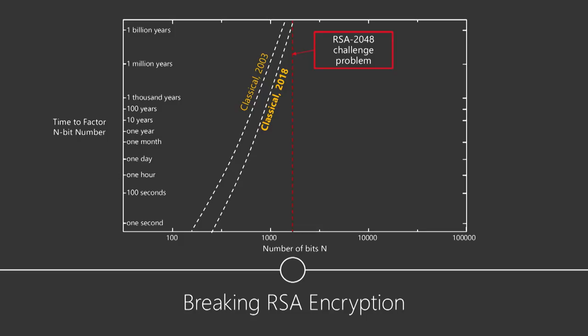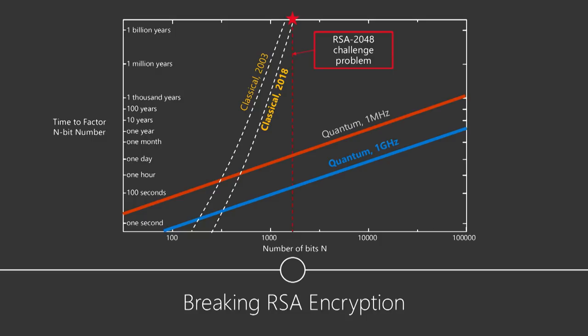The quantum computer doesn't just shift this curve to the right — it's not incremental improvement, it's solving these problems in a totally different way, producing a totally different curve. Clocked at a megahertz, a quantum computer solves this in about a day; at a gigahertz, about a minute and a half. This represents how quantum computing is a truly different compute paradigm. And this is also a big problem we're actively working to solve — we need cryptography protocols immune to quantum attacks, quantum-safe crypto running on classical hardware, before quantum computers reach that scale.